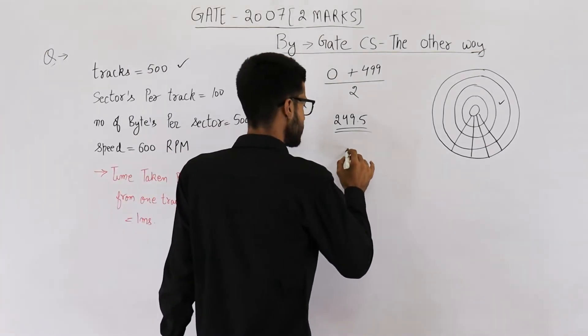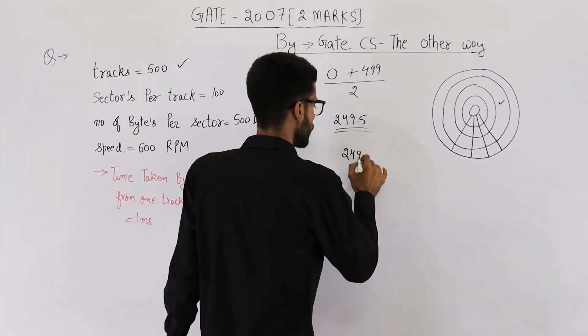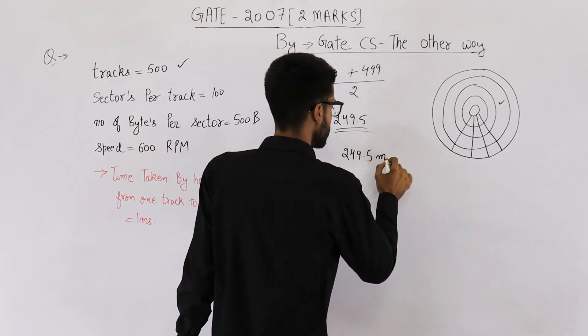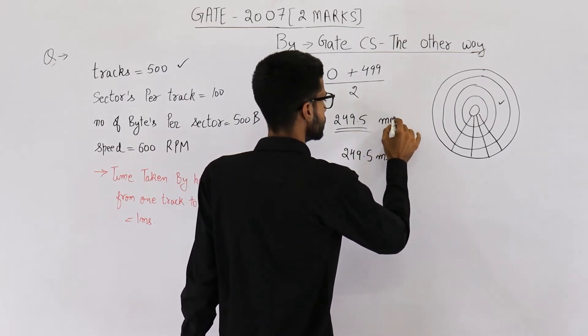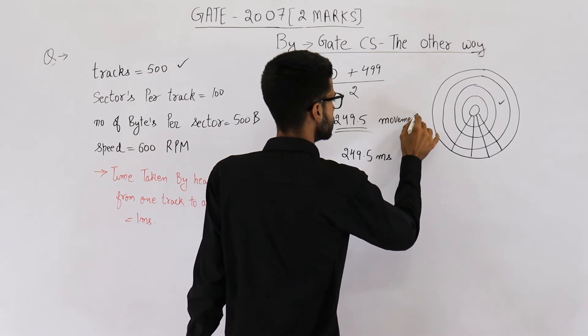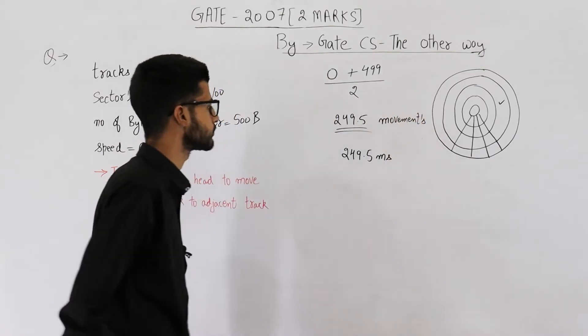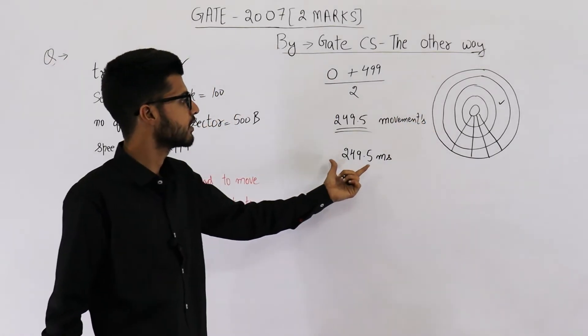We need to move across 249.5 tracks on average. Movement across one track requires one millisecond. This means in average case, you might take 249.5 milliseconds of seek time. So we have calculated the seek time.